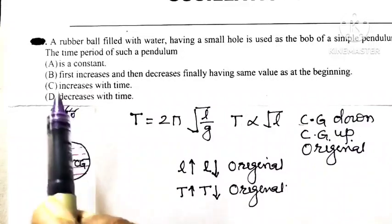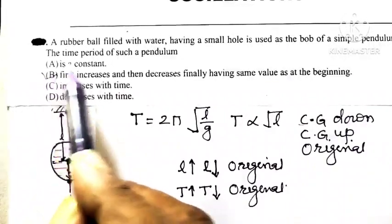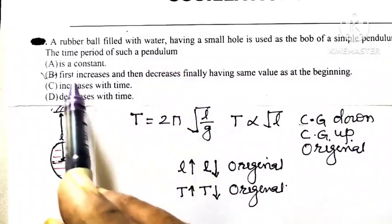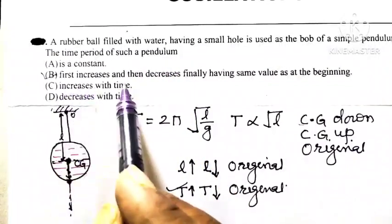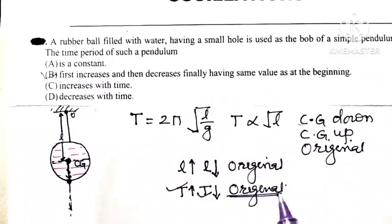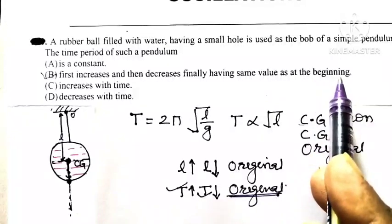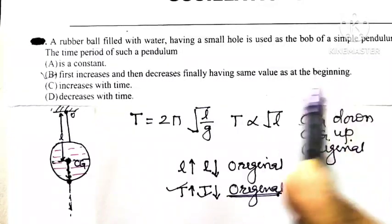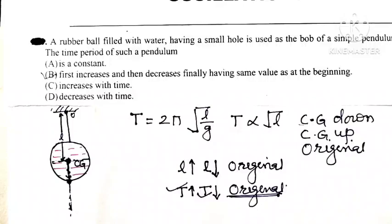So out of the options, look at option B. Time period of such pendulum will first increase, and then decrease, and finally having the same value, that is original value, at the beginning. So the correct option for this question is option B.